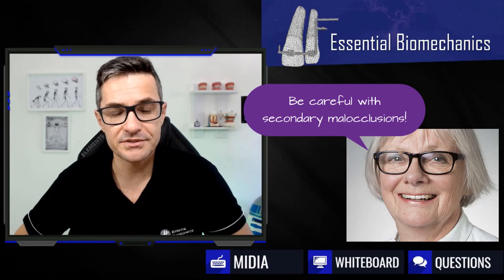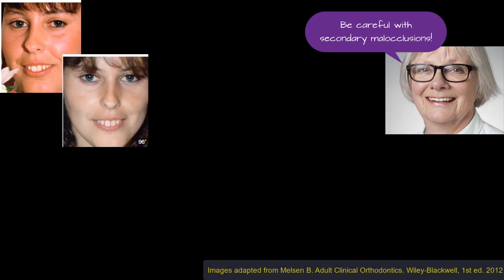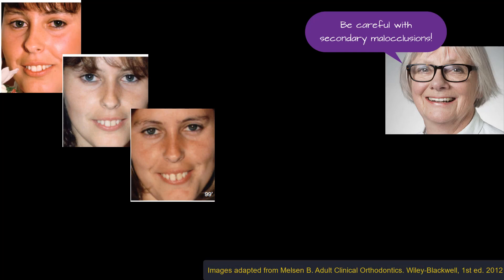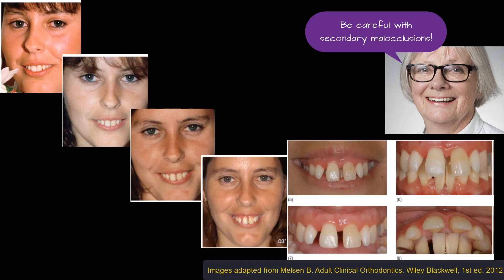This case, in which malocclusions have developed or worsened in adulthood, are called secondary malocclusions, according to Dr. Milsson. These cases are common in orthodontics and the problems get worse as time goes on. Unfortunately, in several of these cases, the patient has not been appropriately diagnosed by the dentist, or may have been misinformed about their problem.